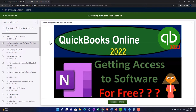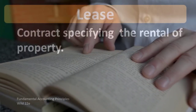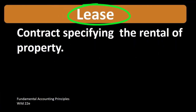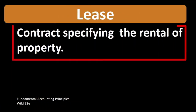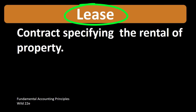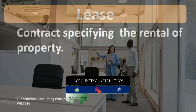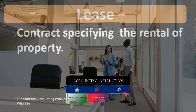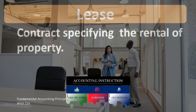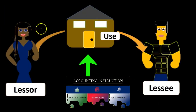According to Fundamental Accounting Principles, Wild 22nd edition, the definition of a lease is a contract specifying the rental of property. When we're thinking about a lease, we're thinking about a piece of property and two people involved in that property: one, the lessor — the person who owns the property — and two, the lessee, who is going to have temporary use of the property.